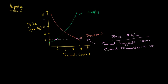Well, here we have a shortage of 3,000 pounds at that price point. At $1, a lot more people are going to want to buy apples, and the producers just didn't produce enough. So what will naturally start happening? If you have the shortage, all these people want to buy apples, and so those apples might get bid up — the price is going to start going up.